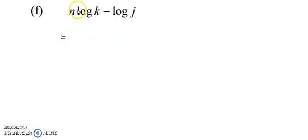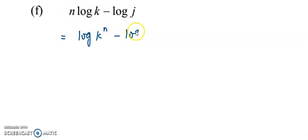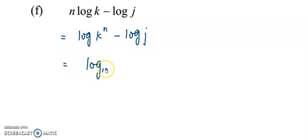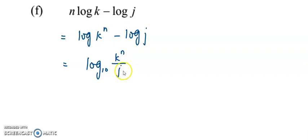For Example F, I need to move the n up to become the power of k, giving log k to the n, minus log j. Again, they have base 10. Combine them, and because the operation is minus, we take k to the power of n divided by j.